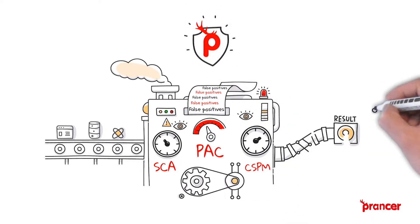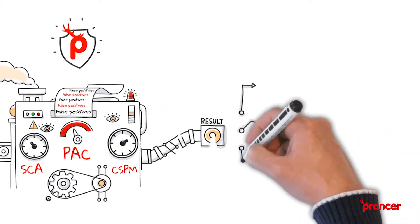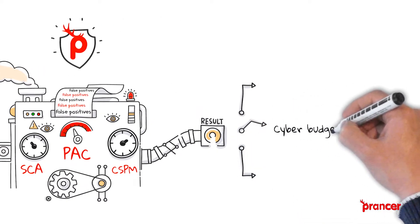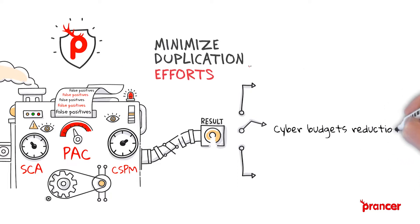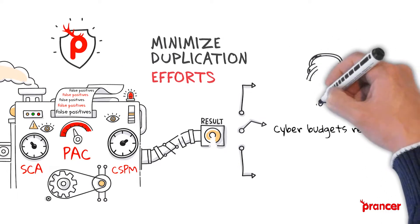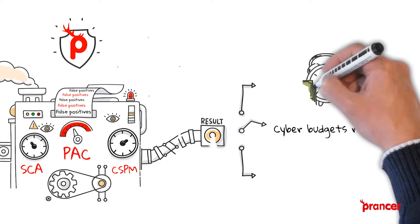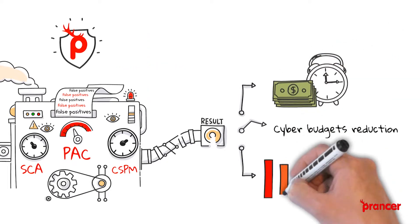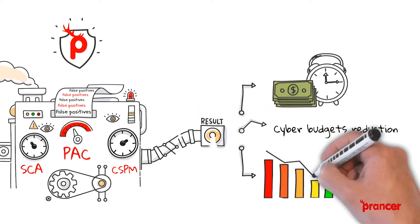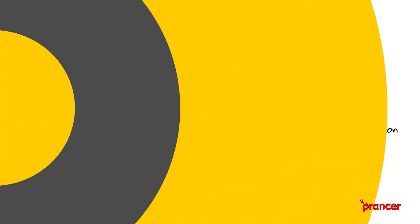The cyber budgets are reduced significantly since PAC can detect potential risks more efficiently than humans ever would. This helps minimize duplication efforts across a wide range of native and third-party tools for cloud security products, making it easier than ever before to get accurate information about your organization's risk exposure via automation.